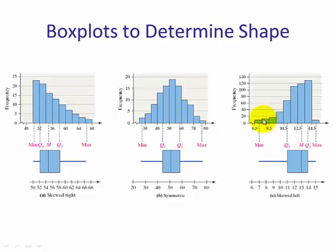And the last one, skewed left, we can see that here, the left tail is longer than the right tail. So we have another tool to identify the shape of a distribution, and that's by a box plot.